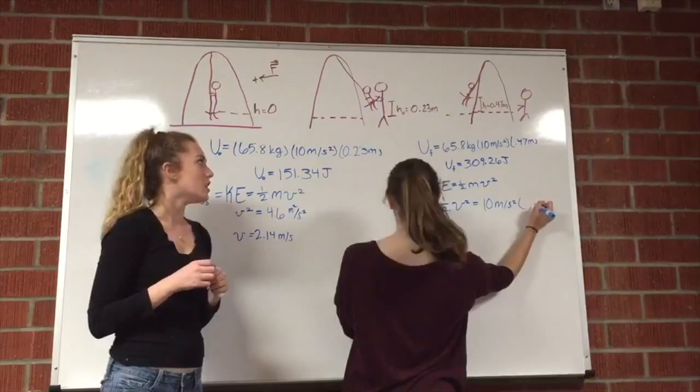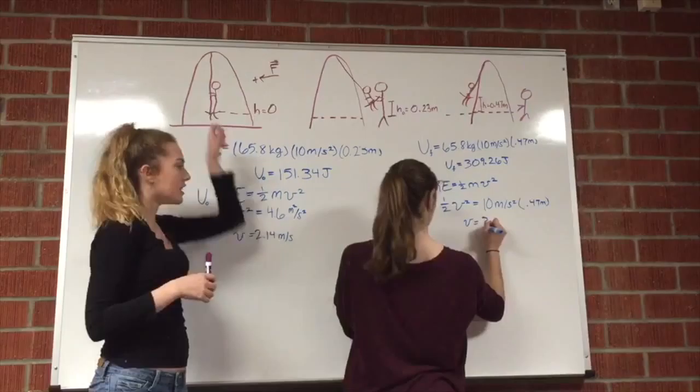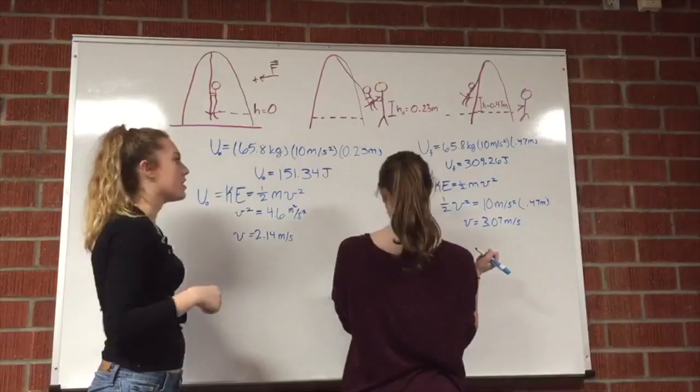But she wasn't just let go. We know that her final height was 0.47 meters, so her final potential energy was about 309 joules.